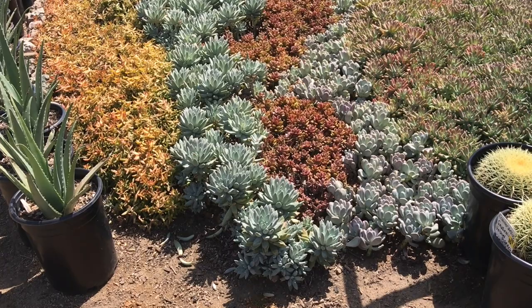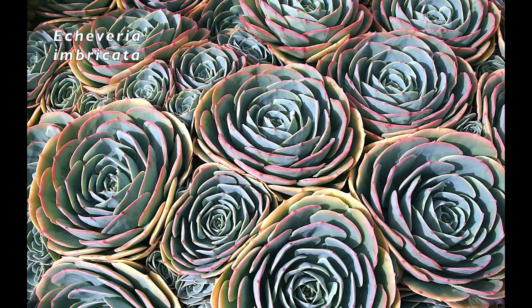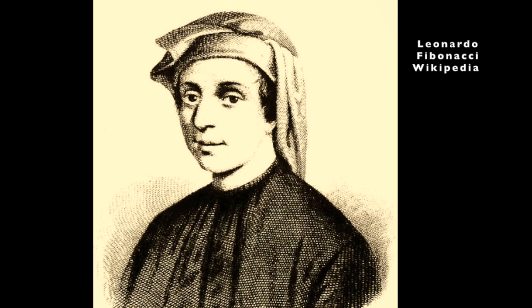What you're seeing is called in botany, spiral phylotaxis. It's when leaves along a plant stem are arranged in the numerical sequence first described by Leonardo Fibonacci, a 12th century Italian mathematician.